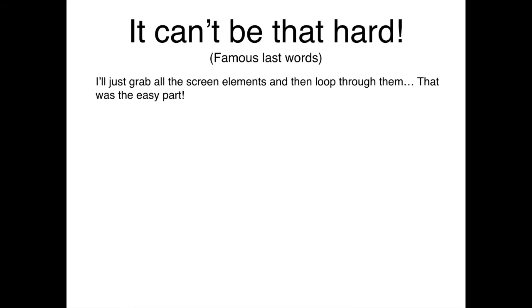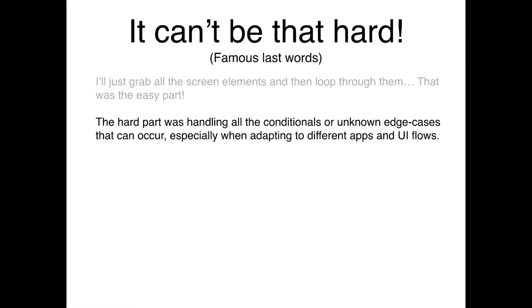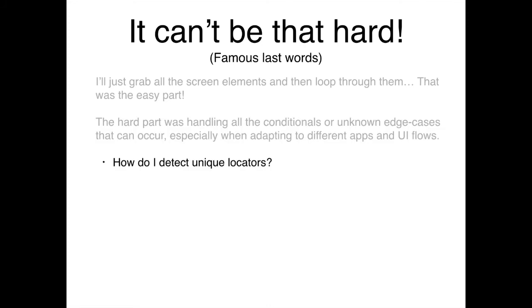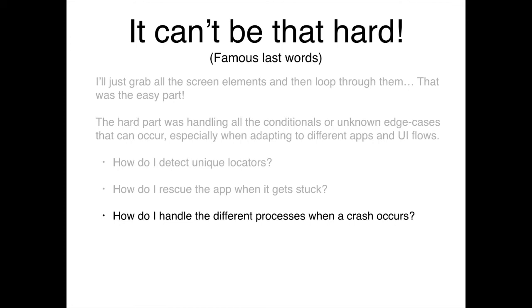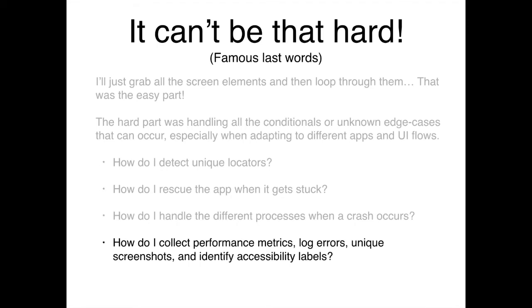When I first started the project, I thought it would be easy — just grab all the screen elements, loop through them, and click them. That was actually the easy part. The hard part was handling all the unknown conditionals and edge cases, especially when building something to work on multiple different apps and UI flows. How do I detect unique locators? How do I rescue the app when it gets stuck? How do I handle different processes when a crash occurs? How do I collect performance metrics, log errors, grab unique screenshots, and identify all accessibility labels?